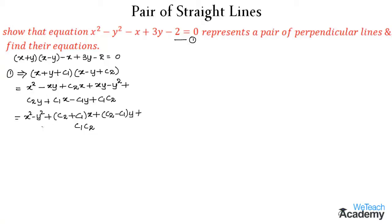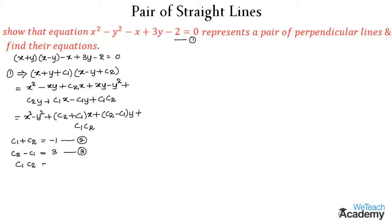Comparing coefficients, we get: c1 + c2 = -1 (the coefficient of x), which we name equation 2. Then c2 - c1 = 3 (the coefficient of y), which we name equation 3. And the constant term c1·c2 = -2, which we name equation 4.